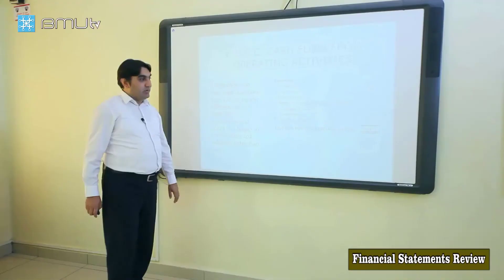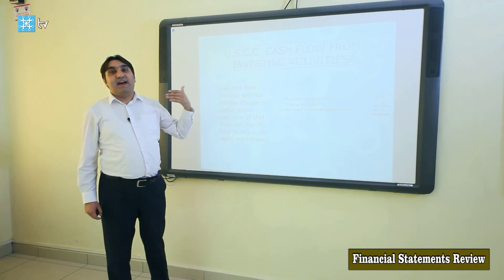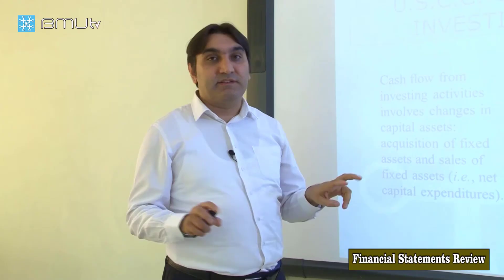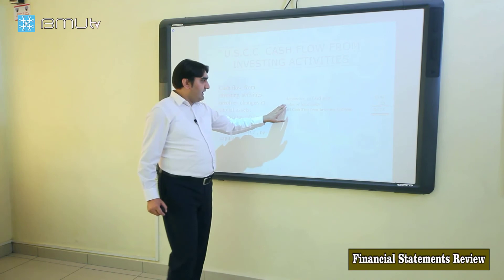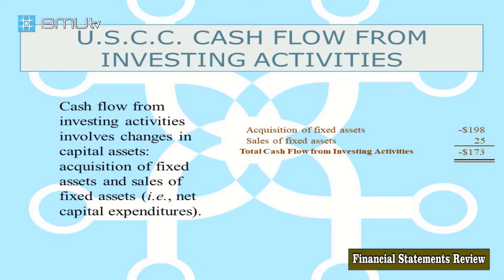The second part of the cash flow statement is cash flow from investing activities — that is, what fixed assets the company has acquired or sold during the period. Buying new fixed assets is a cash outflow, and selling fixed assets is a cash inflow. The company has sold 25 million dollars of fixed assets, and the total cash flow from investing activities is negative 133 million, meaning the company acquired more than it sold.